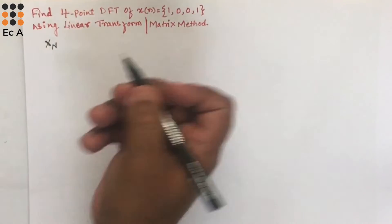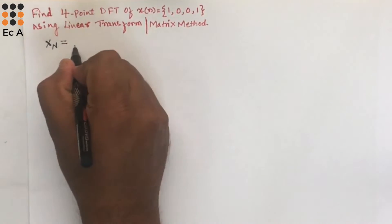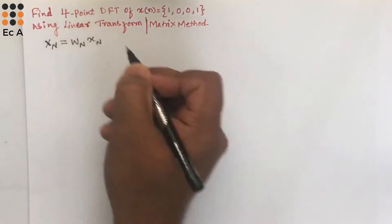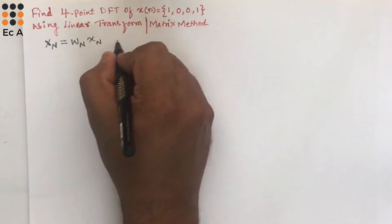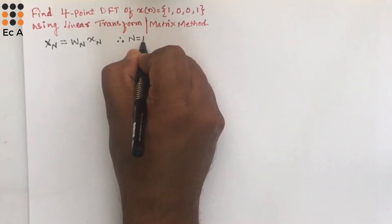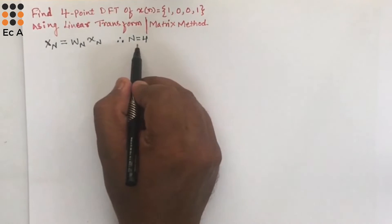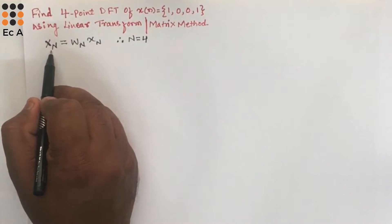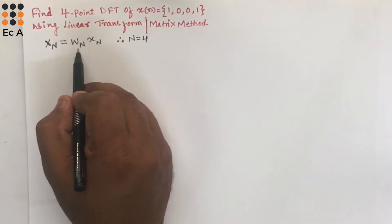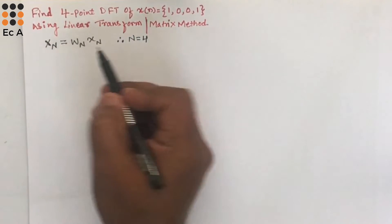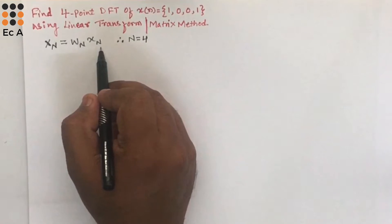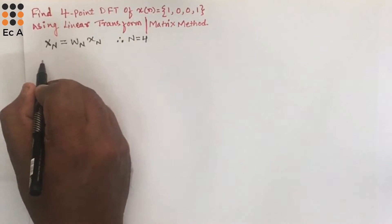We know DFT can be calculated using X[k] = W_N · x[n]. Here they have given a 4-point DFT, therefore N is equal to 4. We need to write a 4×1 matrix for X[k], a 4×4 matrix for W_N, and again a 4×1 matrix for x[n]. So let us write the matrix for this.